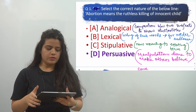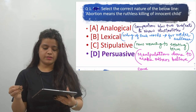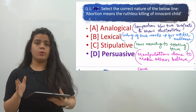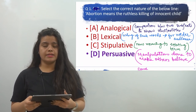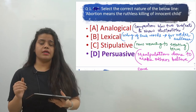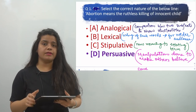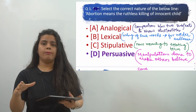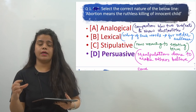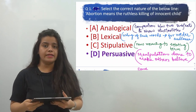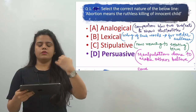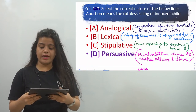The first option is analogical, which means comparison between two subjects to show similarities. Analogical definitions always come in your exams — this is necessary to know. When we compare two subjects to show the similarities between them, that is called an analogical definition. The second option is lexical, which means using such words for a wider audience — words whose meaning the maximum number of people can understand.